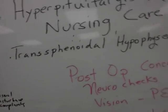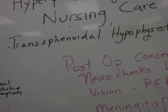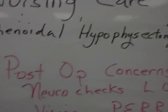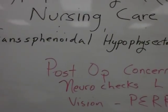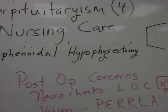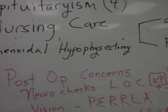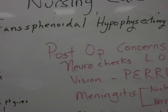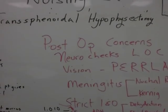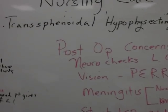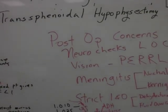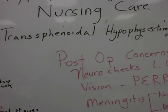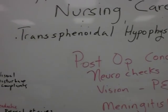Now let's get to some general considerations involving the patient with the transphenoidal hypophysectomy. The transphenoidal hypophysectomy is the most common of the pituitary surgeries. One option is to go through the nose, through the sphenoid sinus, through the meninges, to the pituitary gland. Another approach is to go through the upper gums, through the sphenoid sinus, to the pituitary gland. Either way, both procedures go through the meninges, and there are going to be some concerns with that.